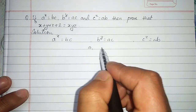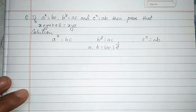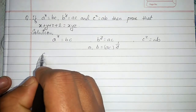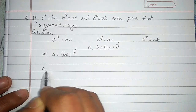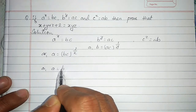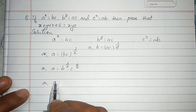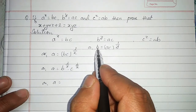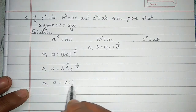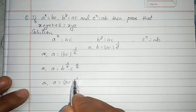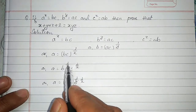From the second condition, b equals ac whole to the power 1 upon y. From the first condition, a equals bc to the power 1 upon x. Substituting the value of b in terms of ac, we write ac whole to the power 1 upon y, into 1 upon x.